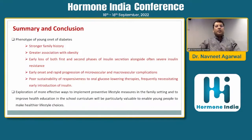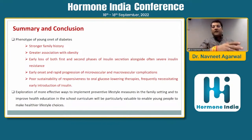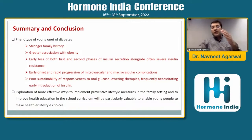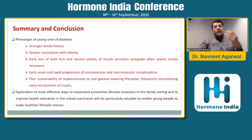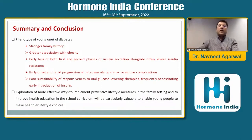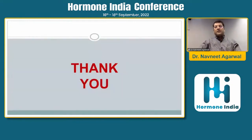To summarize, the phenotype of young-onset diabetes includes: stronger family history, greater association with obesity, early loss of both first and second phase of insulin secretion, early onset and rapid progression of micro and macrovascular complications, poor sustainability of response to oral glucose-lowering therapies, and frequently requiring early introduction of insulin. We need more effective ways to implement preventive lifestyle measures in the family setting and improve health education in school curricula, as the pathogenesis of early-onset type 2 diabetes starts from school-going children who are obese and carry excess visceral fat. Thank you very much.